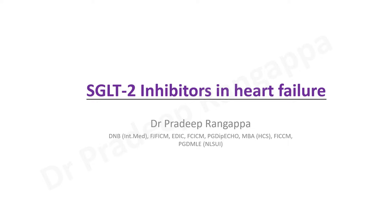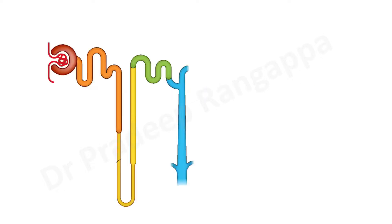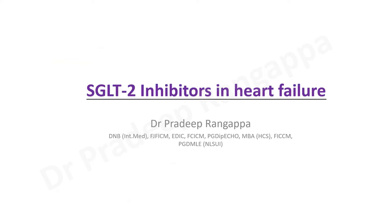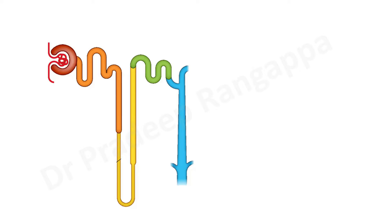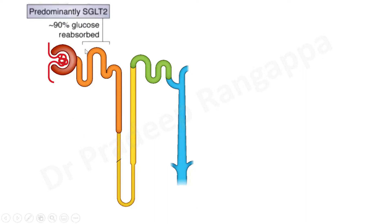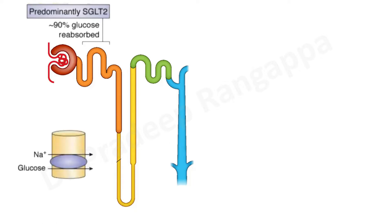So what are SGLT2 inhibitors? SGLT2 simply means sodium-glucose transporter 2 inhibitors. The way these drugs act: when you look at the nephron, the proximal tubule is where 90% of glucose is reabsorbed, predominantly through channels called SGLT2. SGLT2 inhibitors are used in diabetic patients to promote glycosuria — to prevent reabsorption of glucose so that glycosuria happens and sugar control is achieved. Sodium and glucose move together into these SGLT2 channels, and this is where inhibition happens.